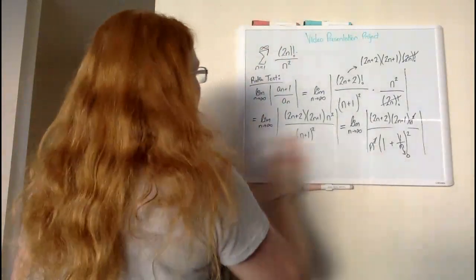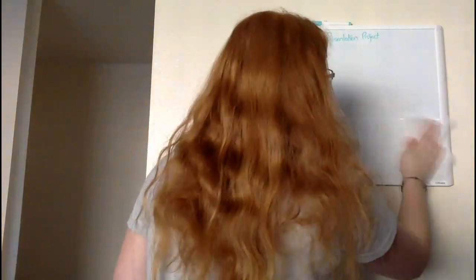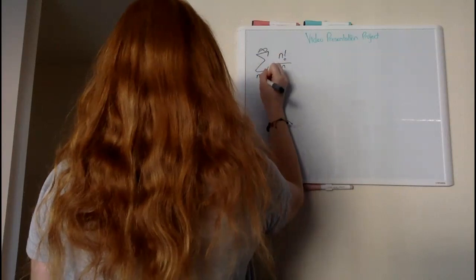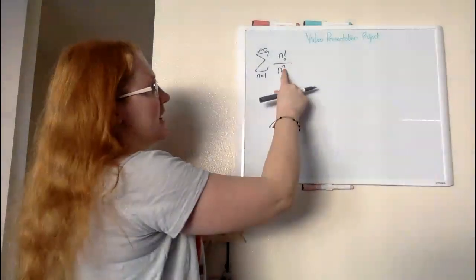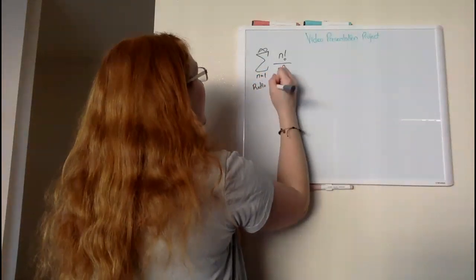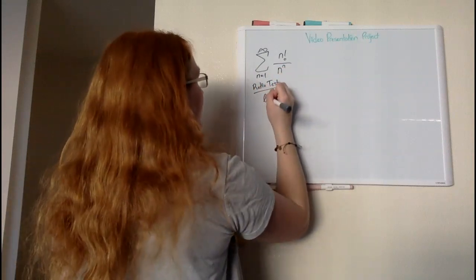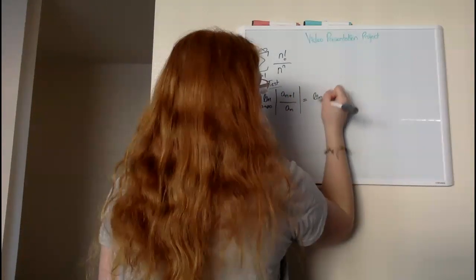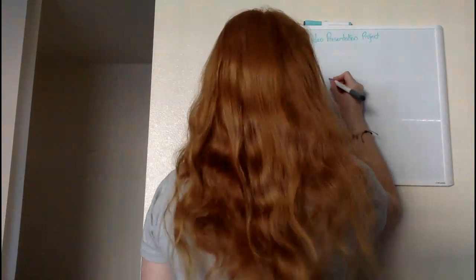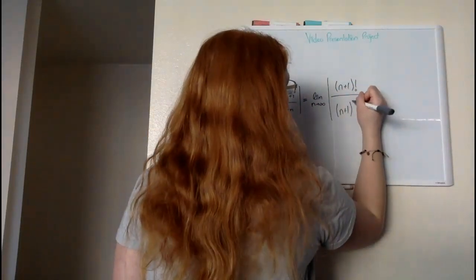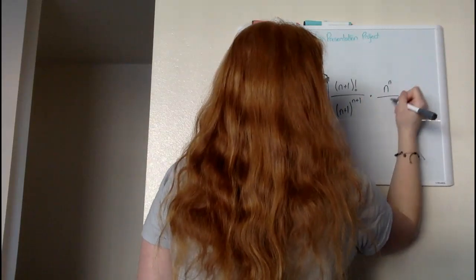Now I'm going to move on to my second example. For example number two, we have our series of n factorial all over n to the n. Again we identify we have our factorial, but we also have our nth power, so immediately we're going to identify the ratio test as what we want to do. So we have our limit as n approaches infinity of our series plus one all over our series — we're going to have the absolute value, it's going to be n plus one factorial all over n plus one to the nth power, over n factorial.